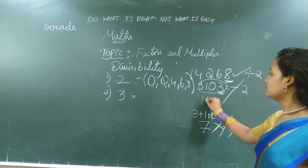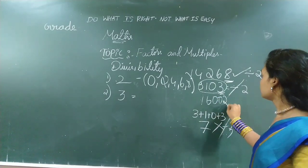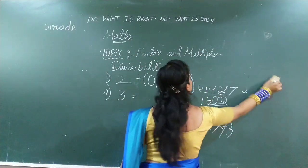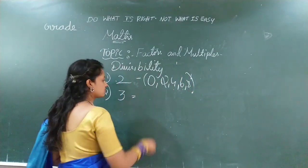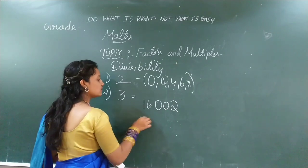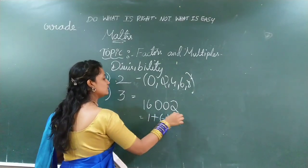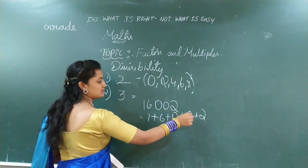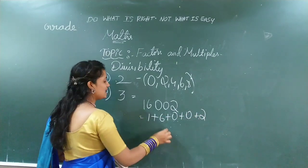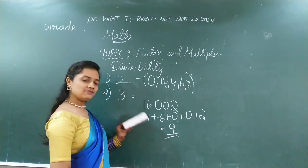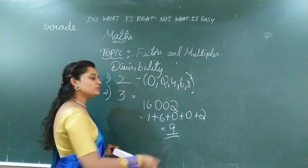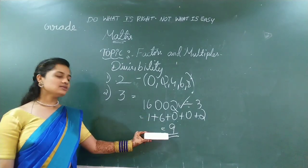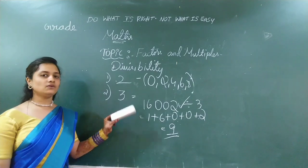Let's take one more example. Add all the digits: 1 + 6 + 0 + 0 + 2 = 9. So, my answer is 9. Can you divide 9 by 3? Yes — 3 threes are 9. So, this number will be divided by 3. You should add all the digits and check whether the answer is divisible by 3 or not.